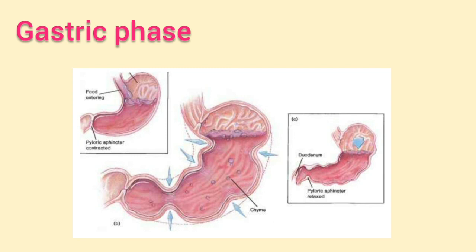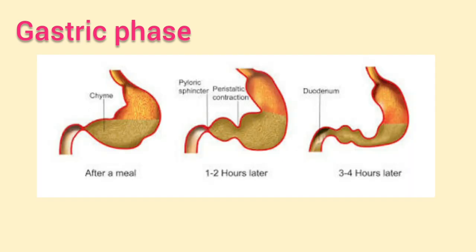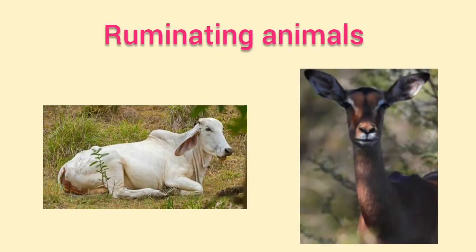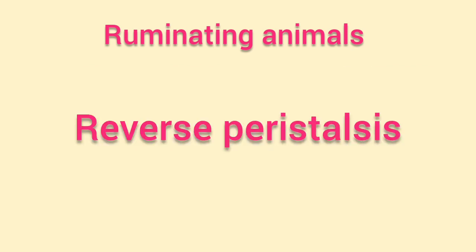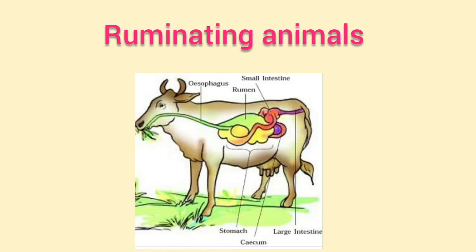Peristalsis involves contraction of the muscle behind the food and relaxation of the muscle in front, giving rise to a thrust that pushes food forward through the digestive canal. In ruminating animals, food is brought back to the mouth by a process called reverse peristalsis. A cow or buffalo can bring food back to the mouth because ruminating animals have an extra pouch in the stomach to store quickly swallowed food, which is absent in humans.